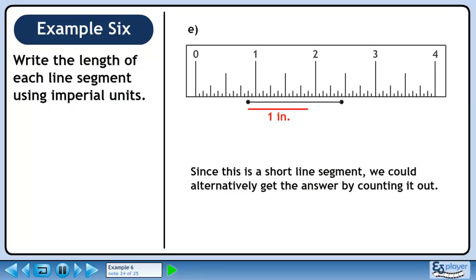We can identify 1 inch by jumping 16 ticks from the starting tick. There are another 9 ticks to go before reaching the end of the line segment. Add these together to get 1 and 9 sixteenths of an inch.